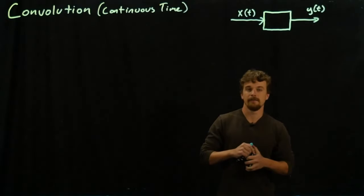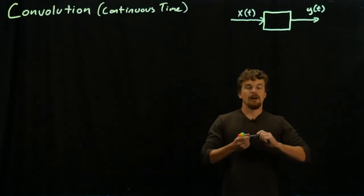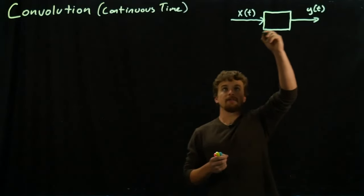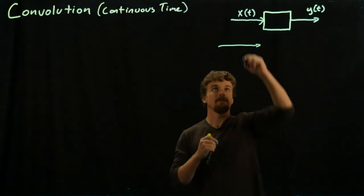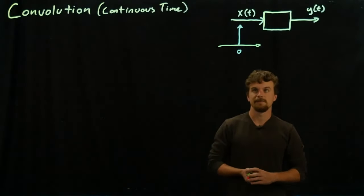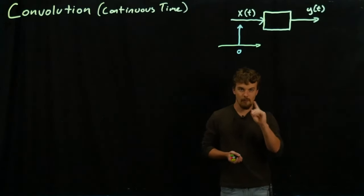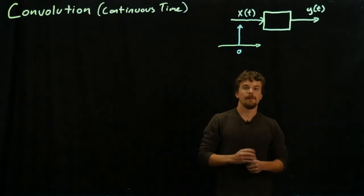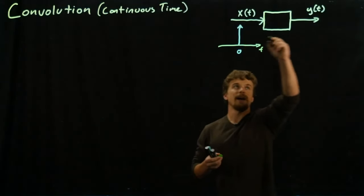The idea is that we have a system with an input and an output. Let's say that we've done some experimentation or some good modeling, and we know what the system outputs when the input x(t) is an impulse function. This impulse function is a theoretical function — it's infinitely tall, infinitesimally wide, and when you integrate over it, it integrates to one. It's theoretical, but it helps us do practical things.